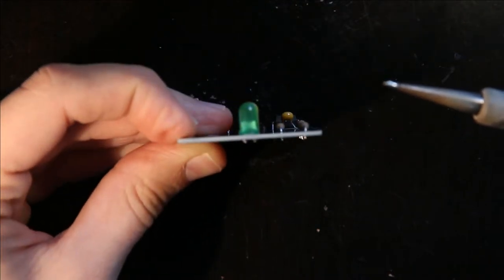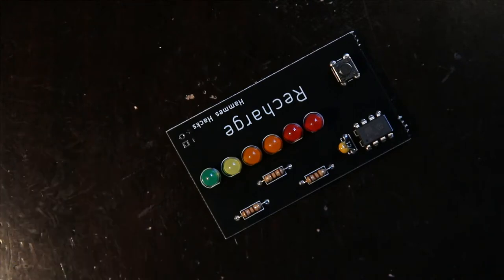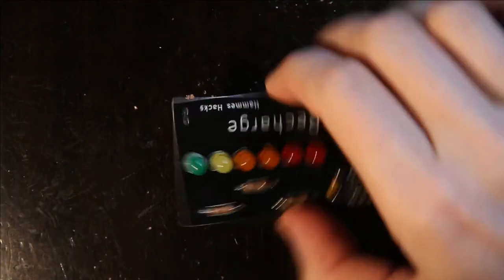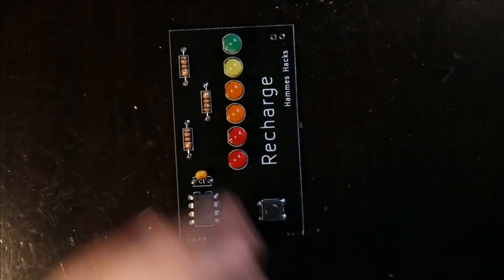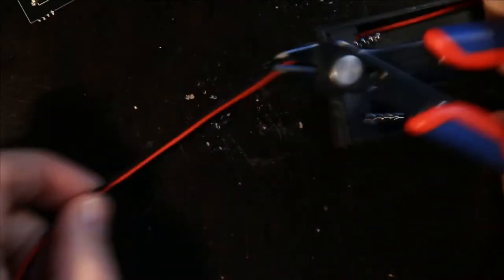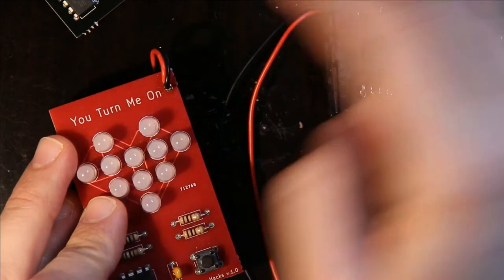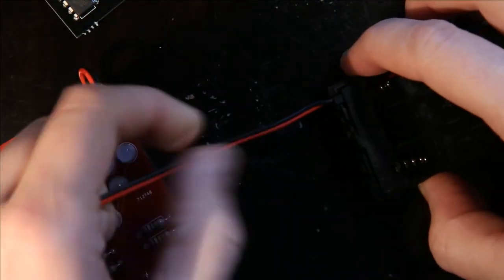The last step is to solder the battery holder and to test the PCB before we glue it all together. What I'm going to do, because I want this one to have a short cable like this rather than a long cable like this one, I'm going to cut it shorter.